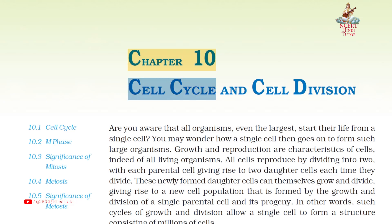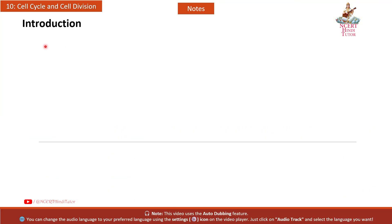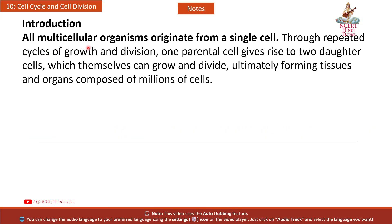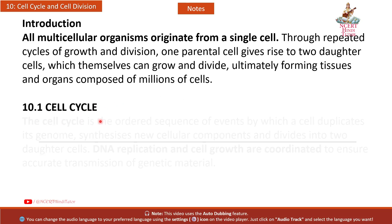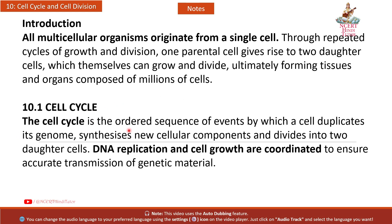Chapter 10: Cell Cycle and Cell Division — Short Notes and Summary from Class 11th Biology. Introduction: All multicellular organisms originate from a single cell. Through repeated cycles of growth and division, one parental cell gives rise to two daughter cells, which themselves can grow and divide, ultimately forming tissues and organs composed of millions of cells.